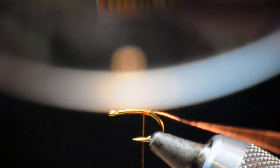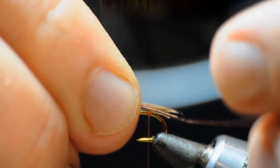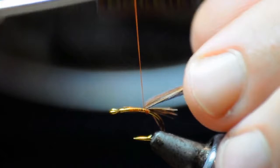First thing I'm doing here is tying in a wire rib, just moving my thread to the back. Next I'm going to clip off about a half dozen pheasant tail fibers. Now I'm going to tie them in as the tail with just a single wrap and then move my thread to the front.